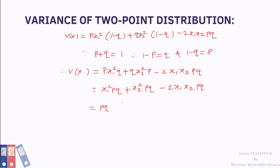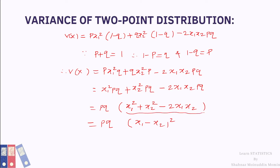We take P·Q as a common factor: P·Q into (X1² plus X2² minus 2·X1·X2), which equals P·Q·(X1 minus X2)². Since X1² plus X2² minus 2·X1·X2 is a perfect square, the variance of two-point distribution is P·Q·(X1 minus X2)².